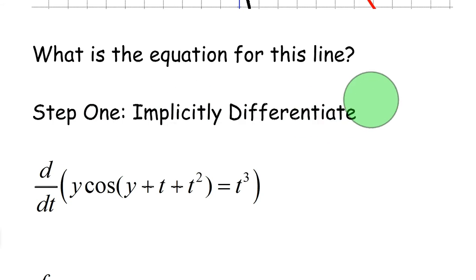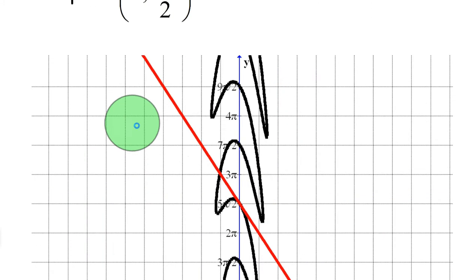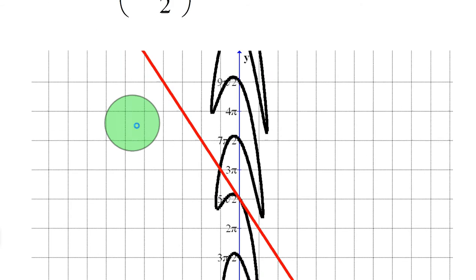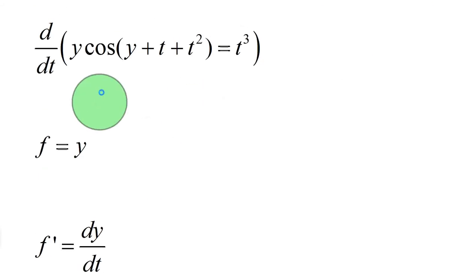So step one is to implicitly differentiate. Let's go ahead and get right to that. We're going to take d dt of this entire equation. Now, you might be thinking, why not d dy? Well, t is an independent variable. Time, usually. And then y is your dependent variable. You could do it the other way around. You get a weird graph, right? Like if y was on the x-axis and t was up here. But anyway, it's just standard to do it that way.